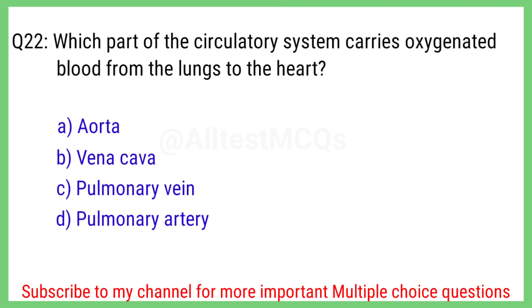Question number 22. Which part of the circulatory system carries oxygenated blood from the lungs to the heart? The right answer is option C. Pulmonary vein.